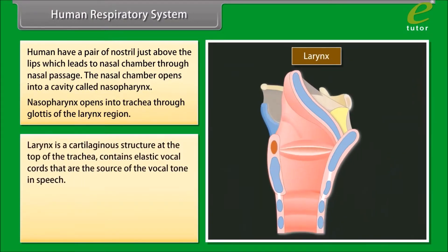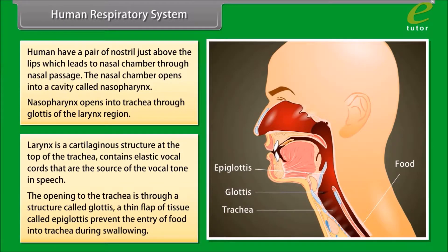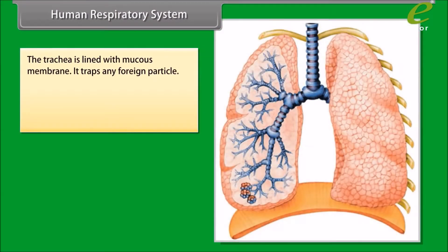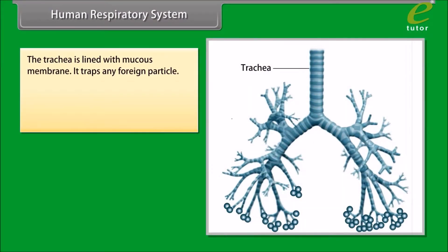The larynx is a cartilaginous structure at the top of the trachea and contains elastic vocal cords that are the source of vocal tone in speech. The opening to the trachea is through a structure called the glottis. A thin flap of tissue called the epiglottis prevents the entry of food into the trachea during swallowing.